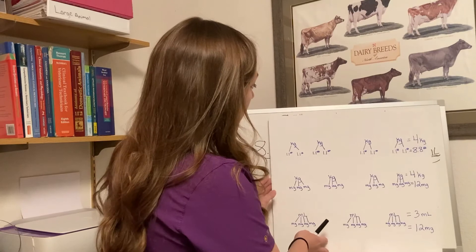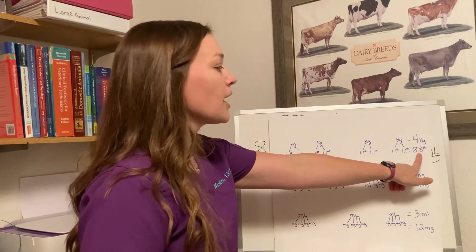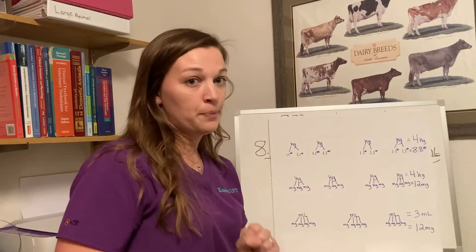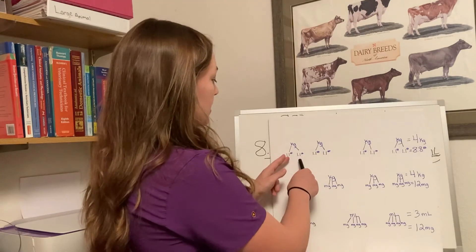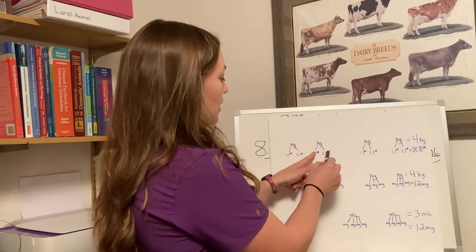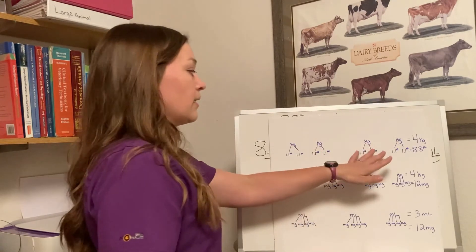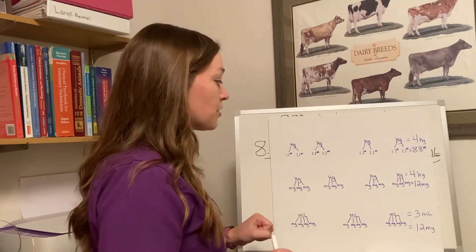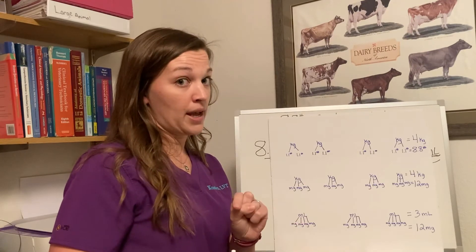We started with our 8.8-pound patient, and we know that it's 2.2 pounds for every one kilogram of weight. So stepping through: 2.2 pounds equals one kilogram, 2.2 pounds equals two kilograms, three, and four. Our patient weighs 4 kilograms.